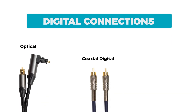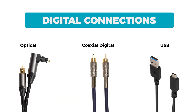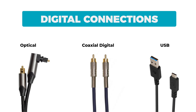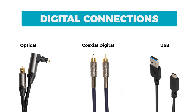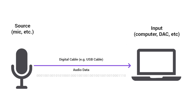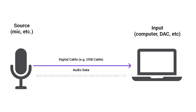Now let's talk about digital. Examples of digital cables are optical, coax digital, or simply a USB connection. They don't carry an electrical signal — instead, they carry digital signals in a series of bits, ones and zeros. Because digital is just data being transferred, the sound doesn't fade or get noisy over distance. As long as you're within that cable's max length, it's crystal clear.